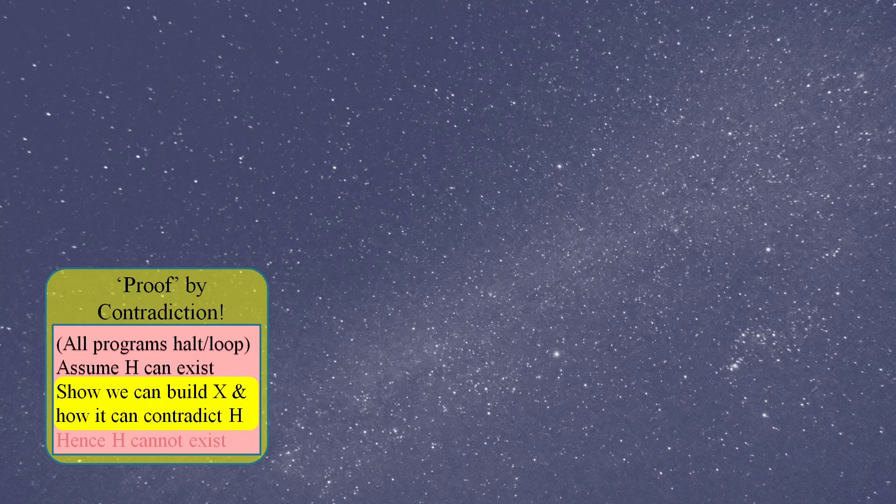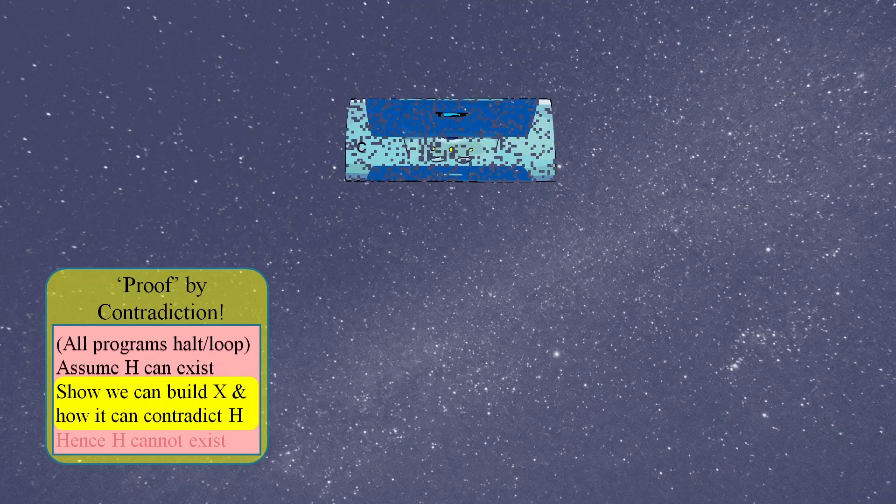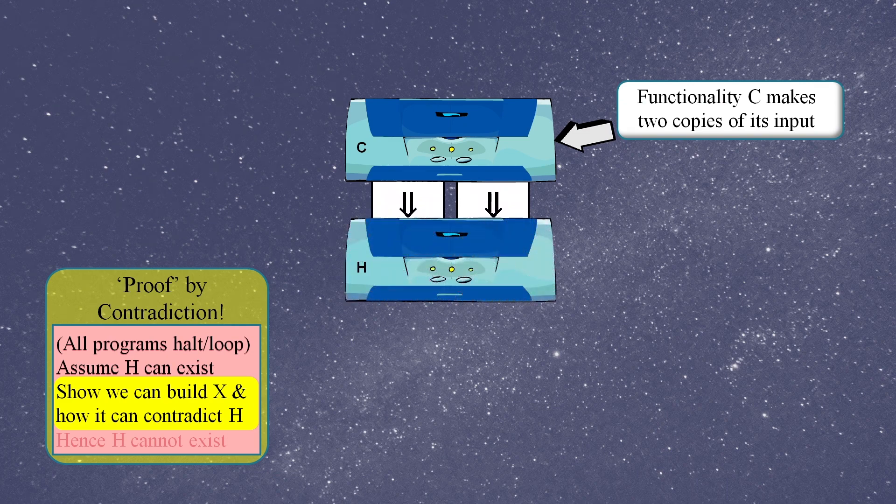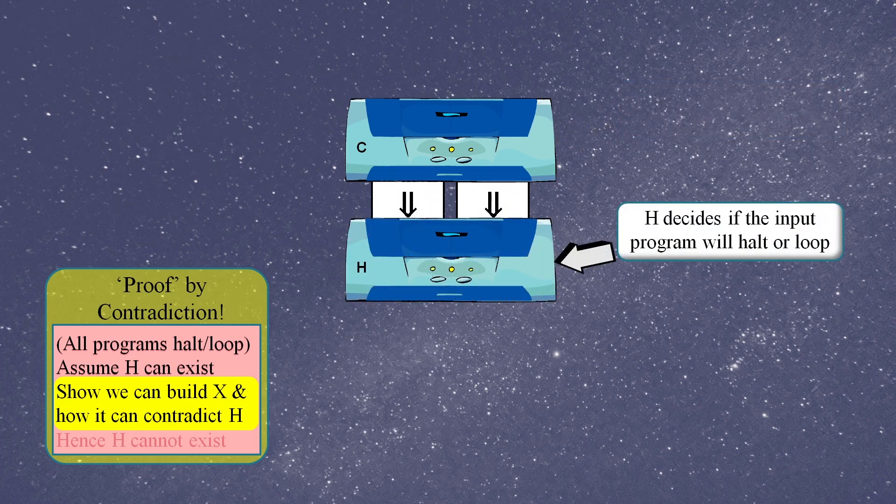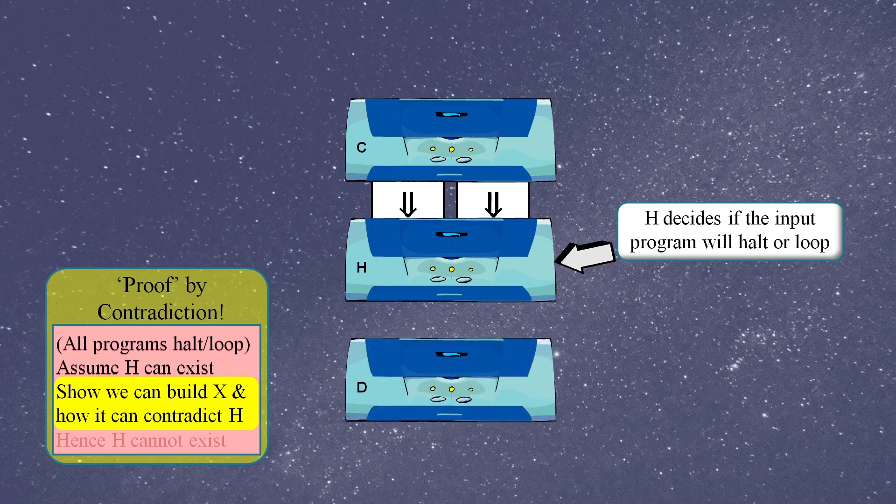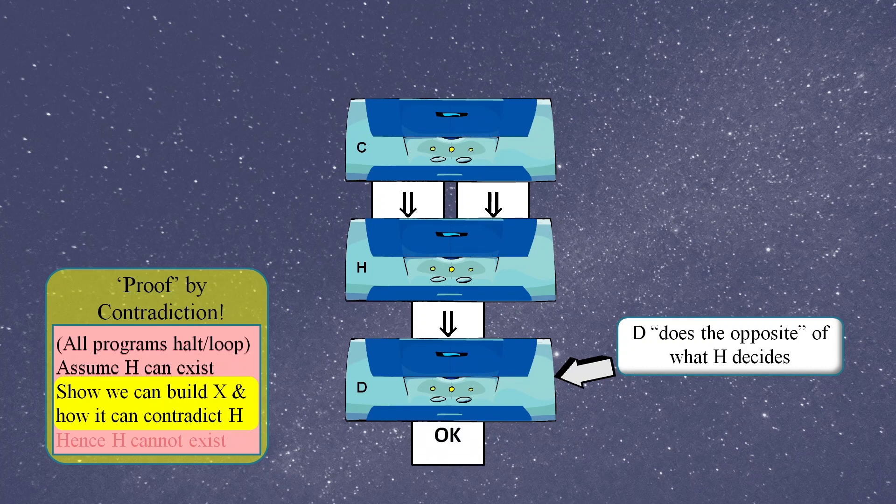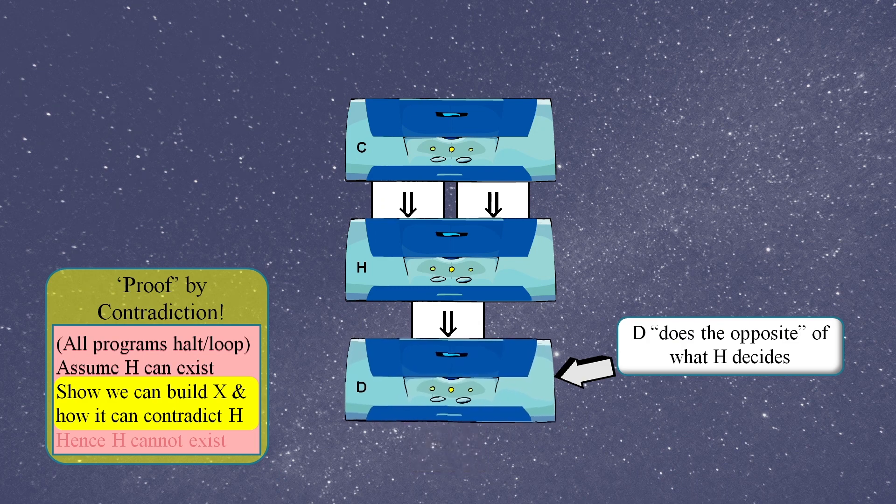We start with a piece of code called functionality C, which simply makes two copies of its input. These two copies feed into functionality H, which is our halt loop decider. The output of functionality H goes into functionality D, which does the opposite of what its input says. So if its input says it will loop, then functionality D will simply print okay and then stop. But if its input says it will halt, then D itself will go into a loop.